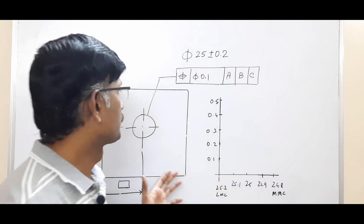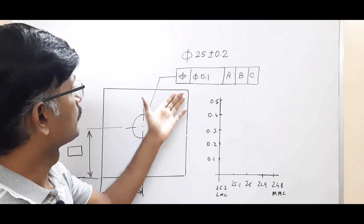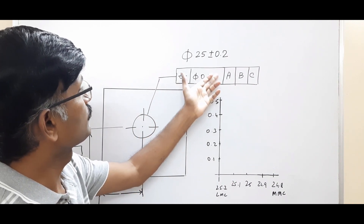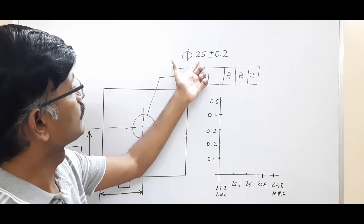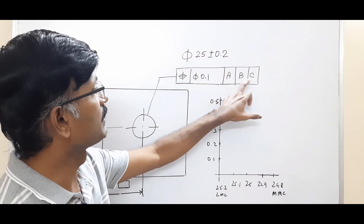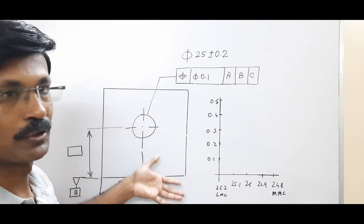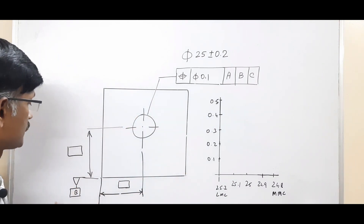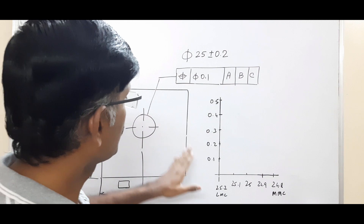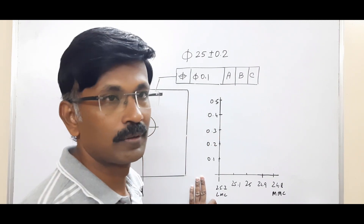For this I have taken a positional tolerance example. We have a positional tolerance applied at regardless of feature size for a hole size of 25 plus or minus 0.2, with reference to A, B, C — A being the rear face which I have not shown in the drawing, and B and C are shown here. For this requirement we can plot a graph, which is called a tolerance diagram.